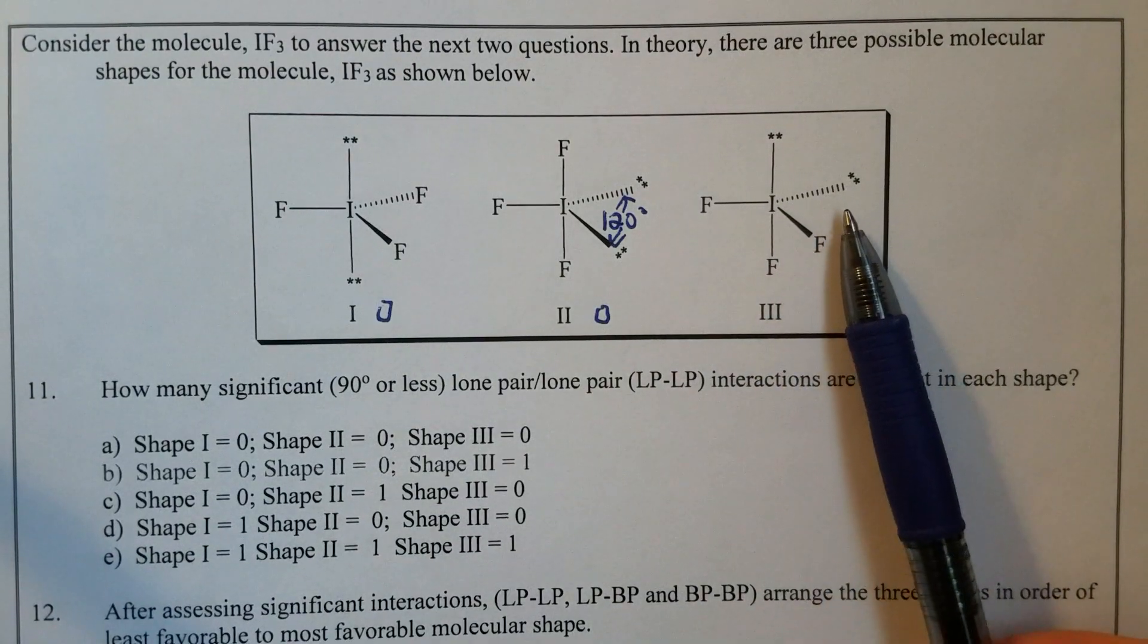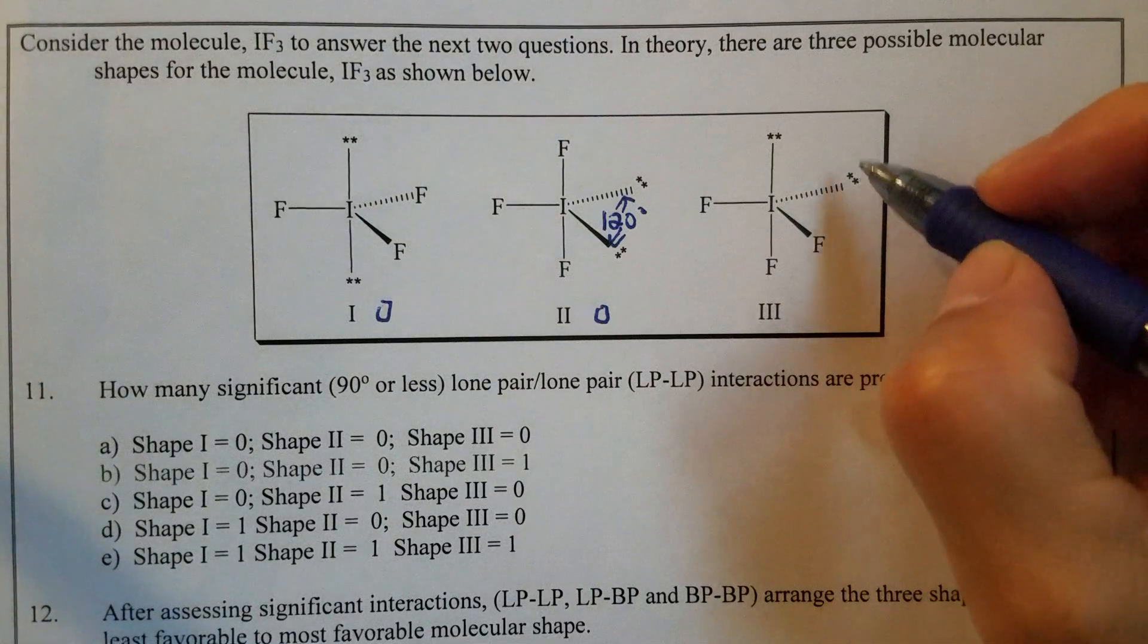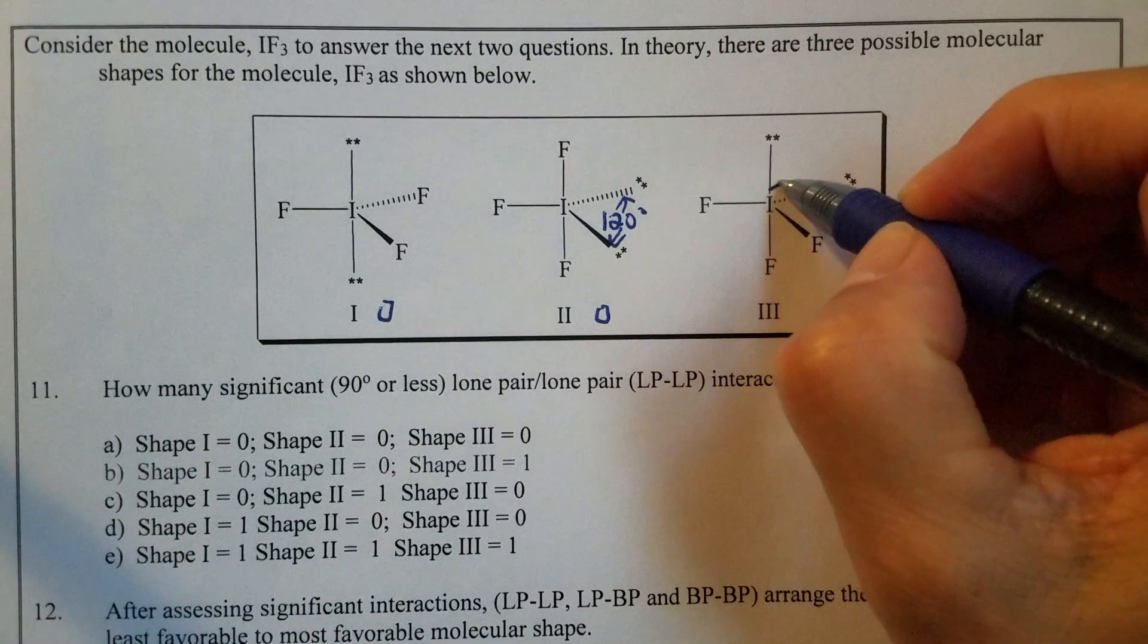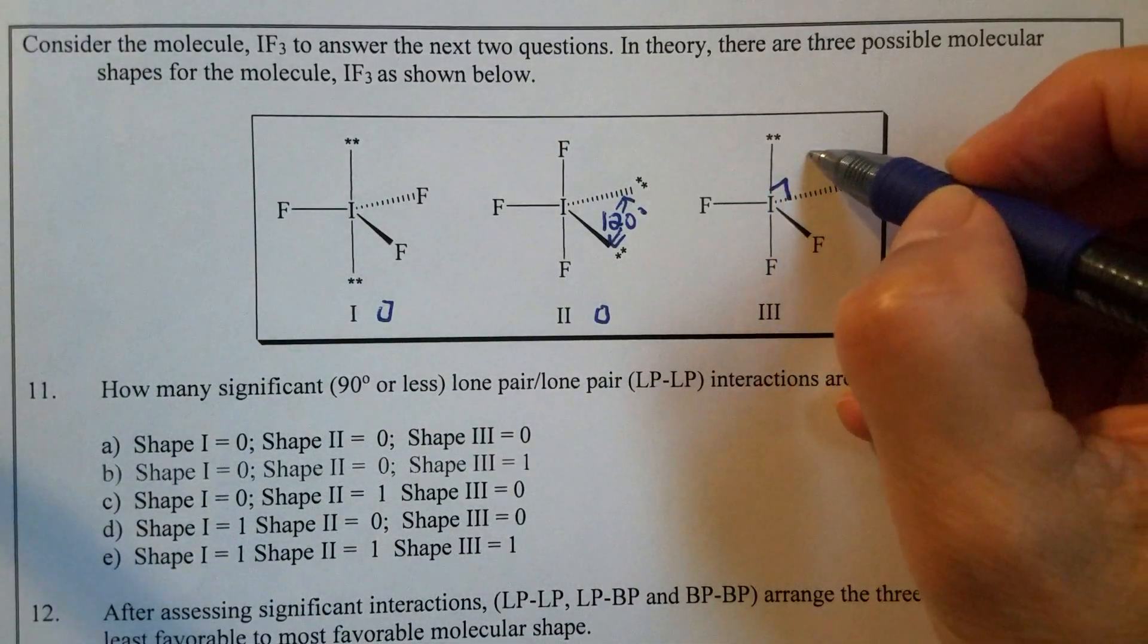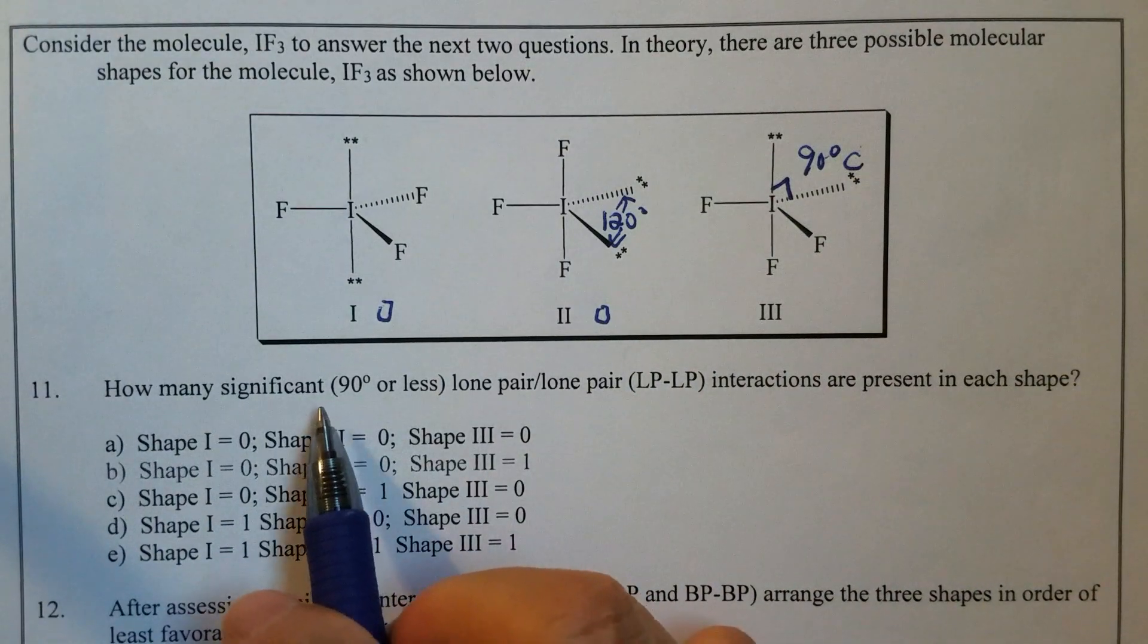Now shape three. Lone-pair, lone-pair, that is actually 90 degrees. 90 degrees is significant.